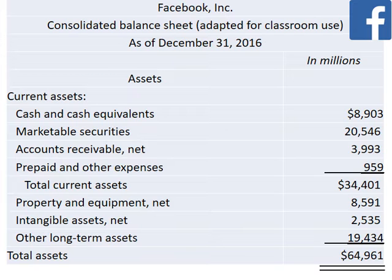After totaling current assets, we move on to long-term assets. Facebook has property and equipment net, intangible assets net, and other long-term assets. The term 'net' will be explained in later chapters — for now, just know it means the figure is net of any account reductions. Finally, we arrive at total assets, which is the total of current assets plus each of the long-term assets. The top number on the financial statement has a dollar sign, as do any later subtotals and the final total. A single underline indicates that numbers above will be added or subtracted, and total assets will be double underlined to show the assets section is complete.